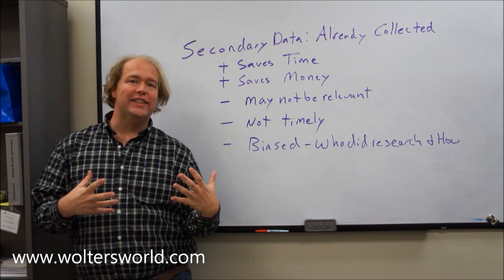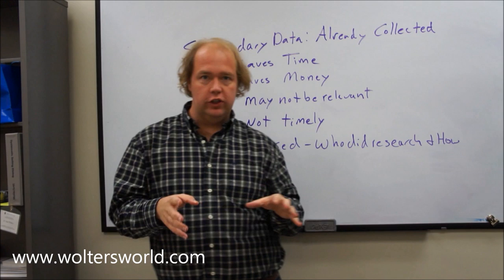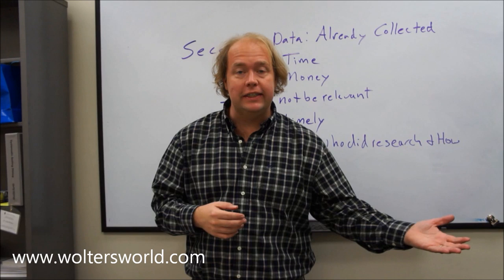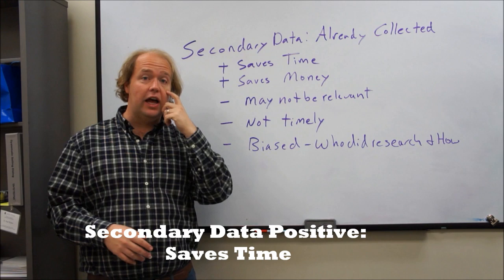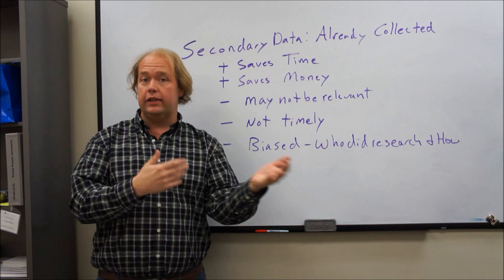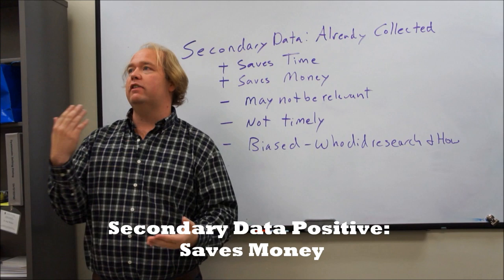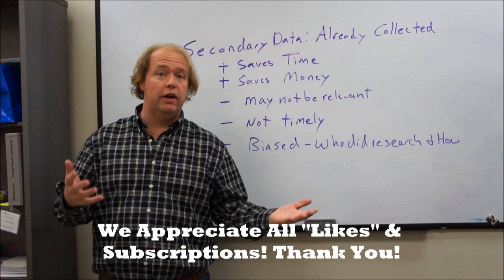Now, what about secondary data? Basically, this is data that has already been collected. When you go searching online on Google to try to find out what's going on in your market, or you look at old marketing data from two or three years ago, this is secondary data — things that have already been collected. What's great about these things is, one, you're saving a lot of time because it's already been done. You can use previous research to learn from that, which is great because it can give you some insights. Another thing is it saves you money because it's already been done. You don't have to spend millions or thousands of dollars or the man hours to get the research done in a primary setting.